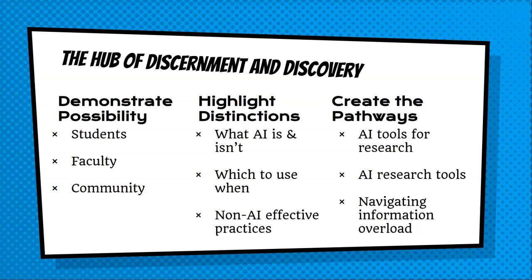Helping folks figure out how to use some of the general AI tools to enhance their research practices will be beneficial, especially as we're seeing the development and deployment of AI research tools — which may be really cool and likely even more pricey and expensive given how databases and academic publishers generally operate. But most importantly, in the immediate sense, is creating pathways to navigate the information overload. Libraries can be crucial in helping faculty and students sift through the tsunami of information about generative AI that's been happening for over a year, as well as how to navigate the information overload when so many folks are using AI to create even more content, accurately or inaccurately.